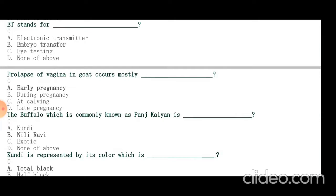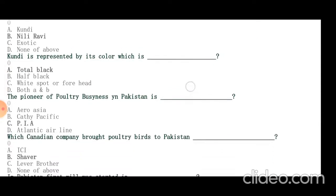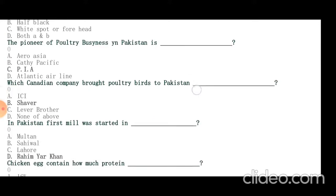Kundi is represented by its color, which is totally black. The pioneer of poultry business in Pakistan is Pakistan International Airlines. Canadian company Shaver brought poultry birds to Pakistan. First mill was established in Rahim Yar Khan.